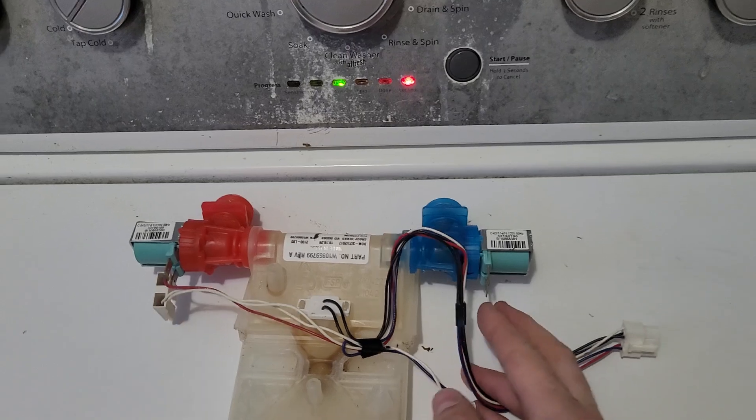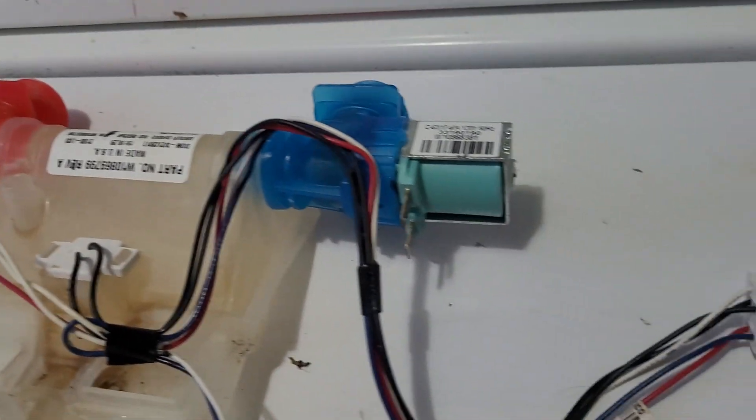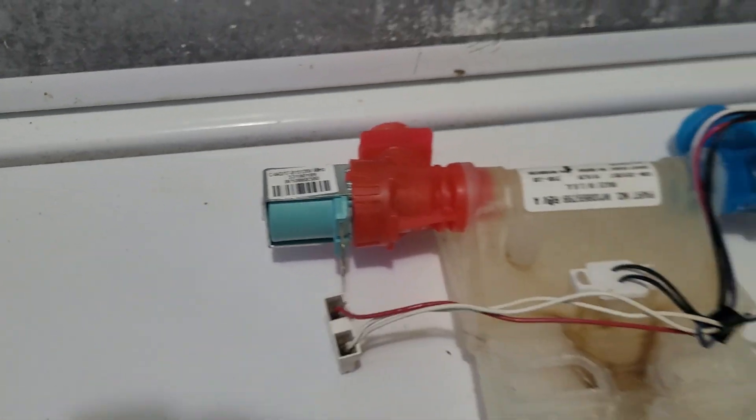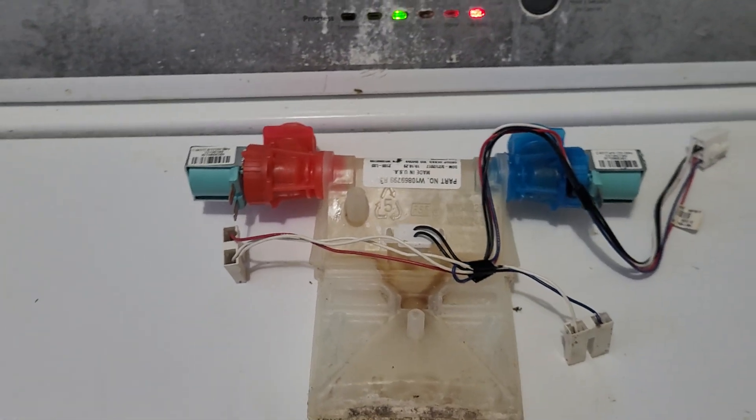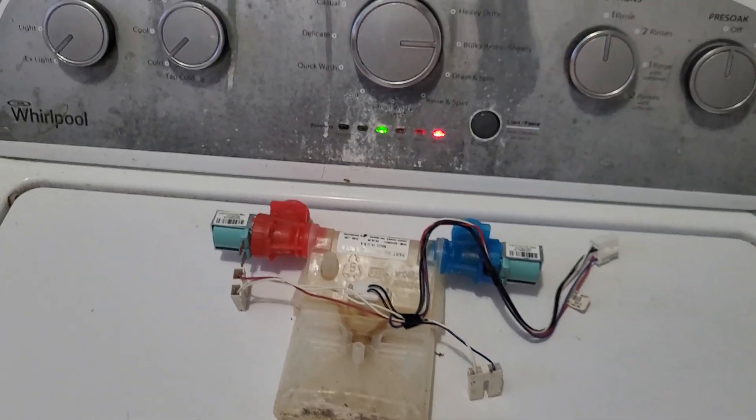By putting a multimeter tool on these two prongs here and then test this side as well. If you're not getting any resistance on either one, this is the problem. So hopefully this will be helpful for you to fix your washer.